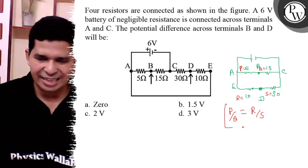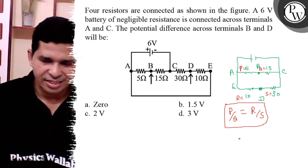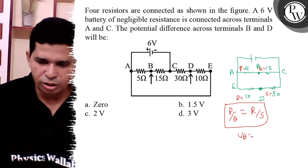So the bridge is balanced. Therefore, VB is equal to VD, and the potential difference is zero.